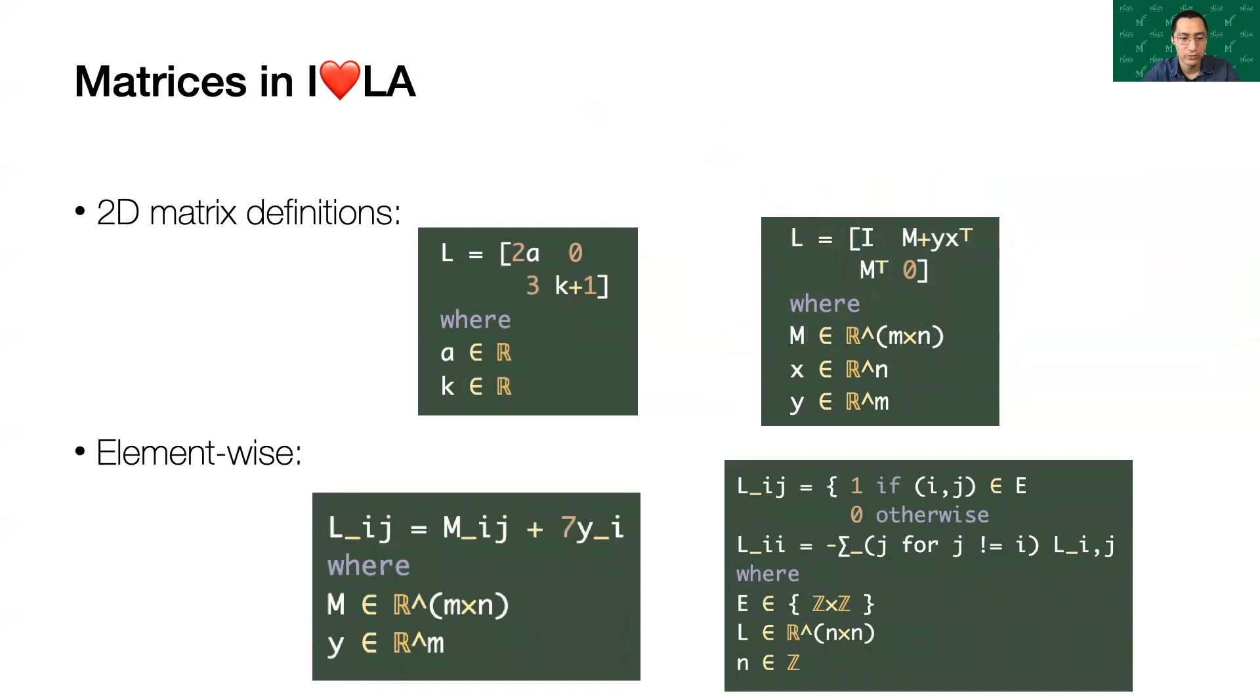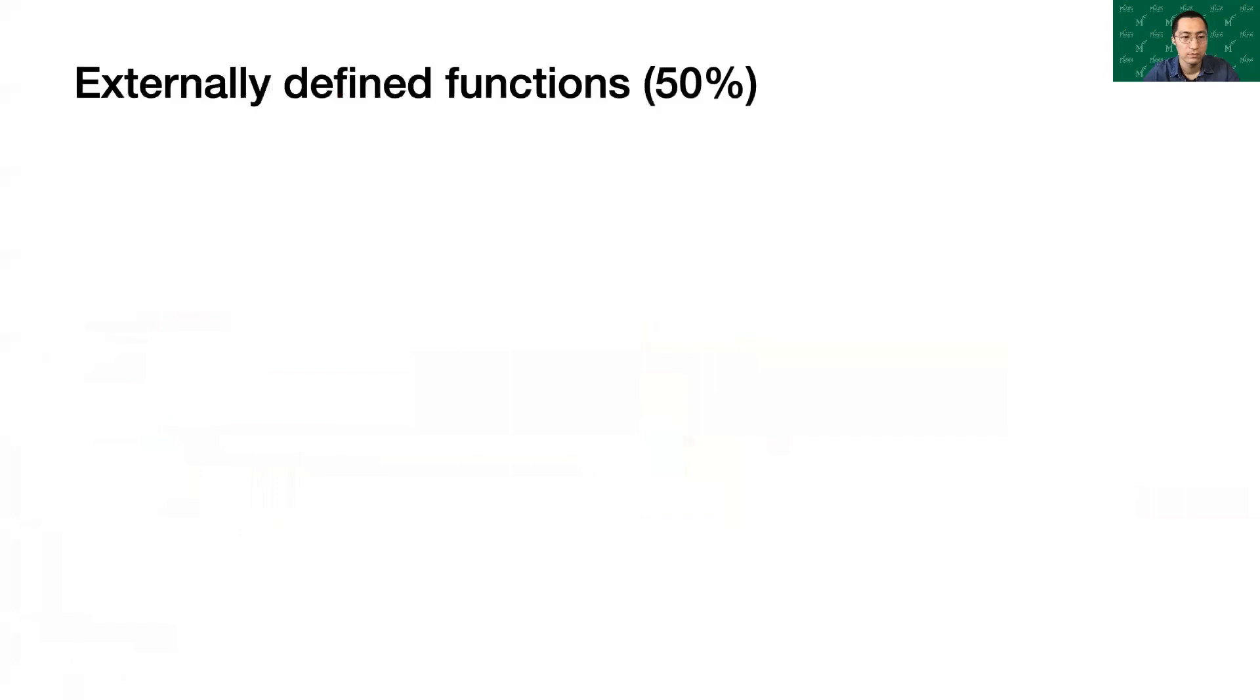Here are examples for element-wise definition. In the left example, the dimension of L is the same as matrix N. The right example defines a sparse matrix and requires a type decoration. Since the elements of L are defined conditionally, the dimensions of L can't otherwise be determined, since there may be additional zeros to the right or below the elements of E.